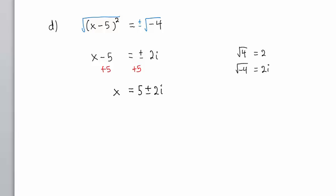We have 5 plus or minus 2i. You do not get 7i, you do not get 3i. We have two solutions: x equals 5 plus 2i, and x equals 5 minus 2i.